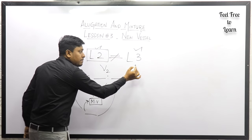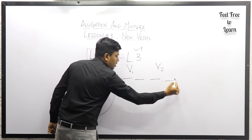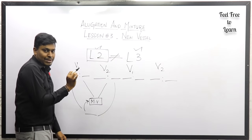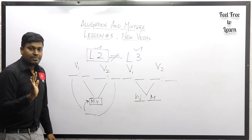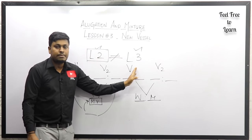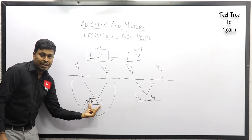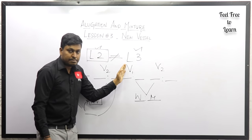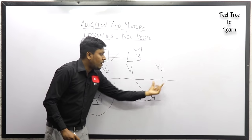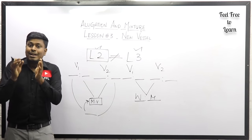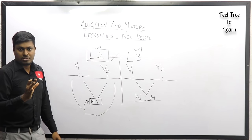In lesson number three, similarly vessel number one, two, three, or four values will be given with their milk and water ratios. But here our target is different — we have to mix all the vessels and find what is the ratio of milk and water in the resulting new vessel. So the major difference is: lesson two asks in what ratio to mix to get a mean value, while lesson three asks what is the final ratio after mixing all vessels.